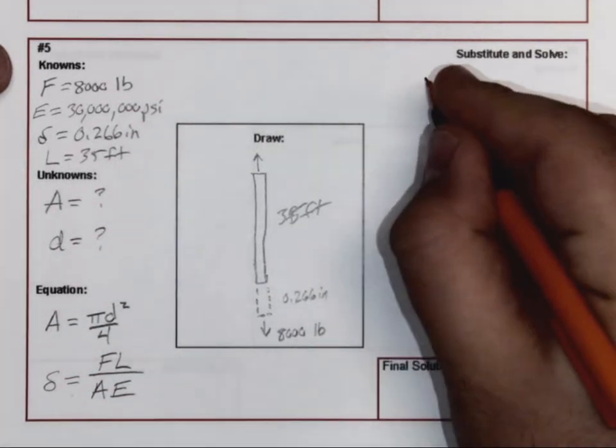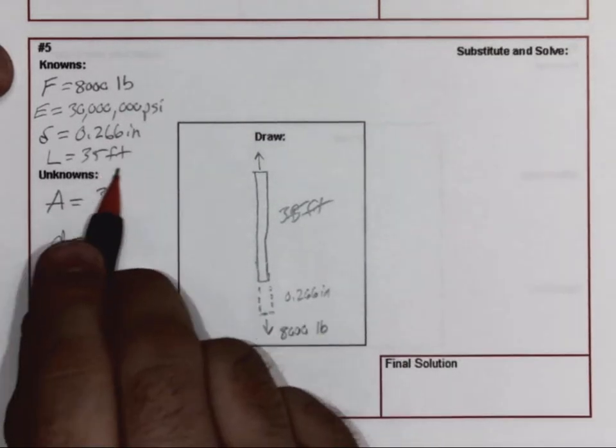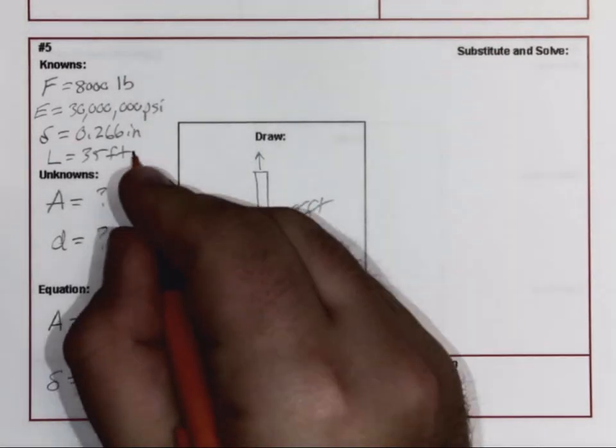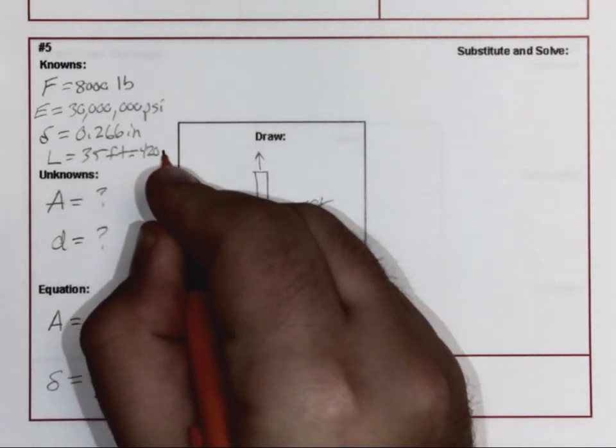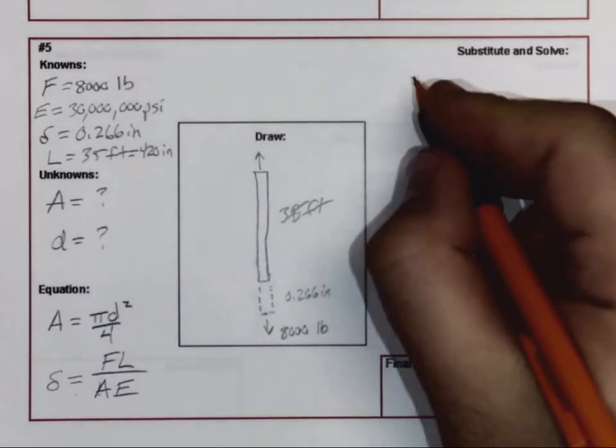As we go through the problem, we need to know first off, what is this area? Well, the other thing here is you also need to know that since we're in PSI on all these units, any of your feet, you need to go through and convert over into inches. So when I convert this over, 420 inches there, and then I can start to put this into the formula.